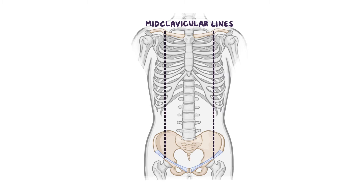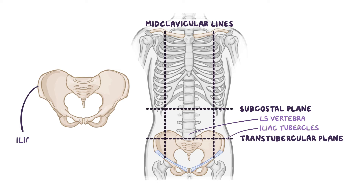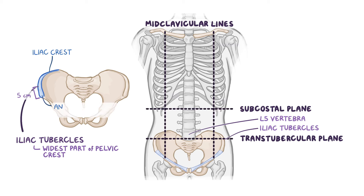Next, imagine there are also two horizontal or transverse lines. The first line goes from left to right just below the 10th rib's costal cartilage, and is therefore known as the subcostal plane. The second horizontal line, which forms the trans-tubercular plane, starts at the iliac tubercles on each side of the pelvis and passes through the L5 vertebrae. The iliac tubercles are located at the widest portion of the outer border of the pelvis, or iliac crest, approximately 5 centimeters posterior to the anterior superior iliac spine. These four anatomical lines define the boundaries of the nine abdominal regions, and the three regions formed in the midline are slightly larger than the six other regions on the left and right.